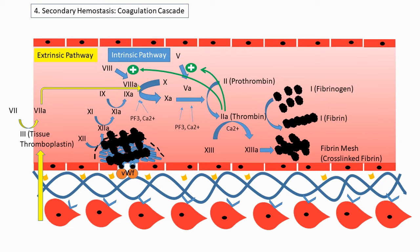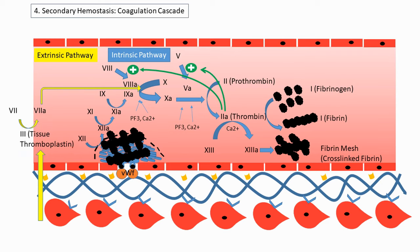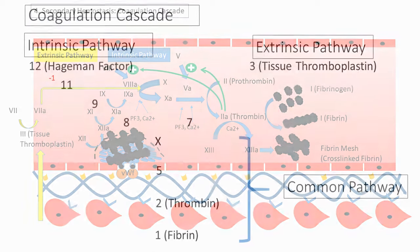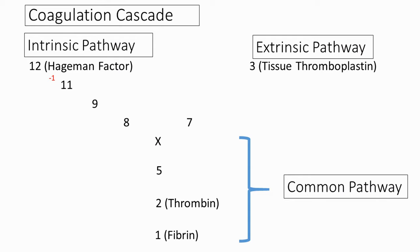For a quick summary: the intrinsic pathway is due to internal trauma and is mediated by Hageman factor (factor 12). The extrinsic pathway is due to external trauma and is mediated by tissue thromboplastin (factor 3). The coagulation cascade can be tough to remember, so here is a summary with some memory tips used by medical students.